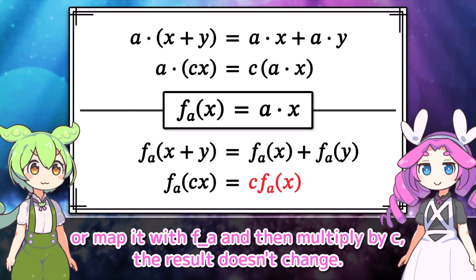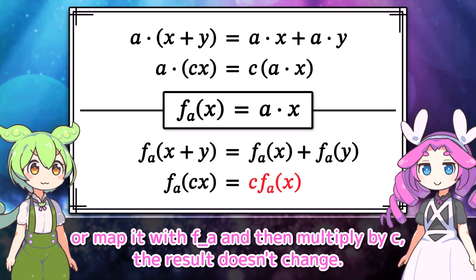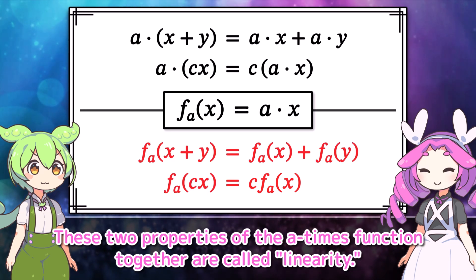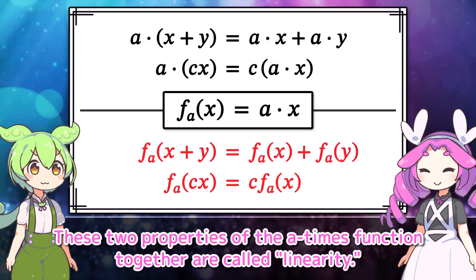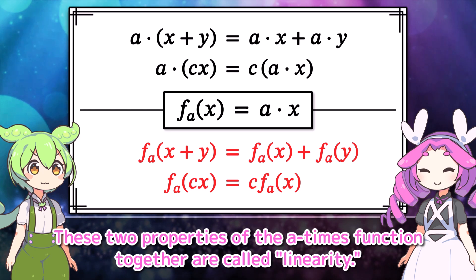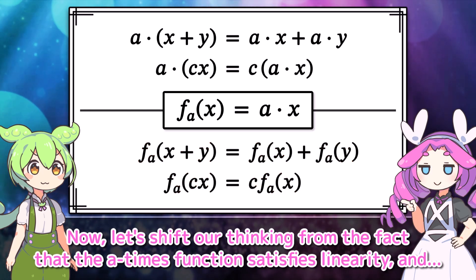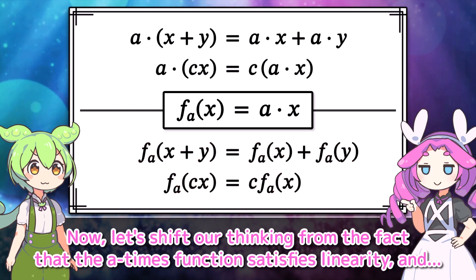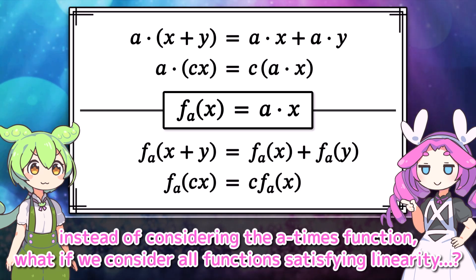Also, in the calculation of the dot product, a scalar multiple of a vector can be taken out. Similarly, if we rewrite this using f sub a, whether you multiply x by an arbitrary constant c and then map it with f sub a, or map it with f sub a and then multiply by c, the result doesn't change.